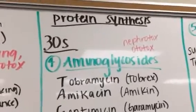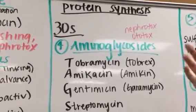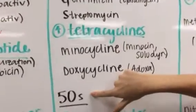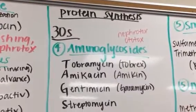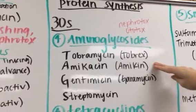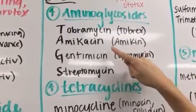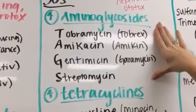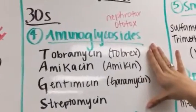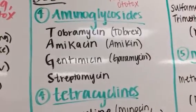Now we move into protein synthesis inhibitors, broken down by ribosomal subunit — 30S and 50S. Ribosomes produce proteins, and these drugs inhibit specific subunits to block that process. Aminoglycosides work at the 30S subunit. I use the acronym TAGS to remember them: Tobramycin, Amikacin, Gentamicin, and Streptomycin. The key toxicities to focus on are nephrotoxicity and ototoxicity. These are not first-line; they're used as last-line agents for severe infections when other options have failed.